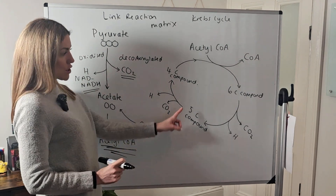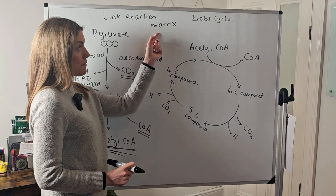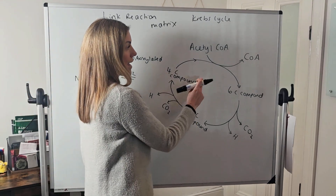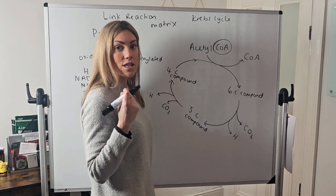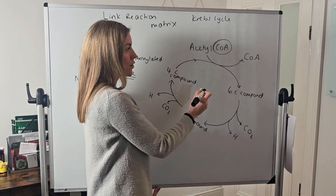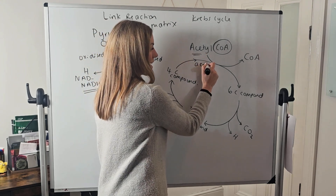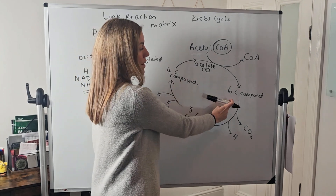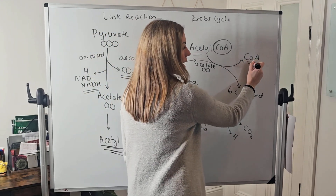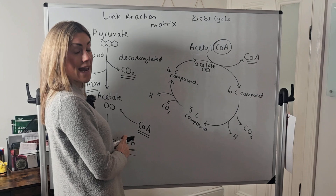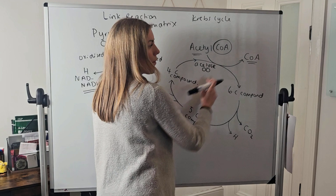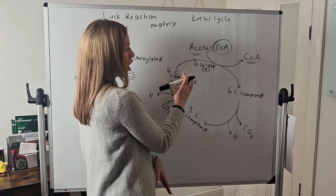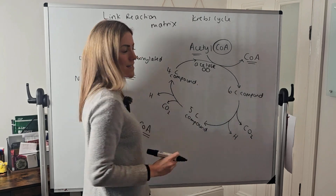Moving on to the Krebs cycle — stage three of aerobic respiration, still in the matrix of the mitochondria. This uses the acetyl CoA from the link reaction. The coenzyme is simply carrying the two-carbon acetate into the Krebs cycle, where it joins with a four-carbon compound to make a six-carbon compound. The coenzyme A can then go back to be reused in the link reaction, so it's being recycled.